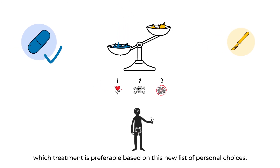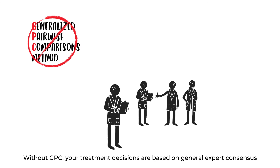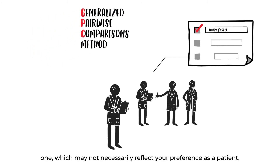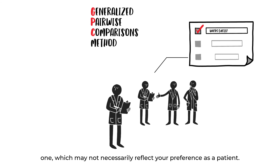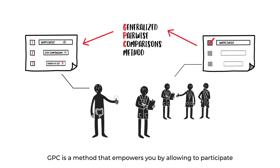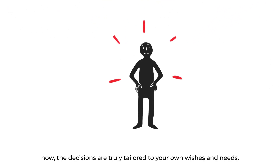It will inform which treatment is preferable based on this new list of personal choices. Without GPC, your treatment decisions are based on general expert consensus on what constitutes a single most important outcome — one which may not necessarily reflect your preference as a patient. GPC is a method that empowers you by allowing participation in making treatment choices. Now the decisions are truly tailored to your own wishes and needs.